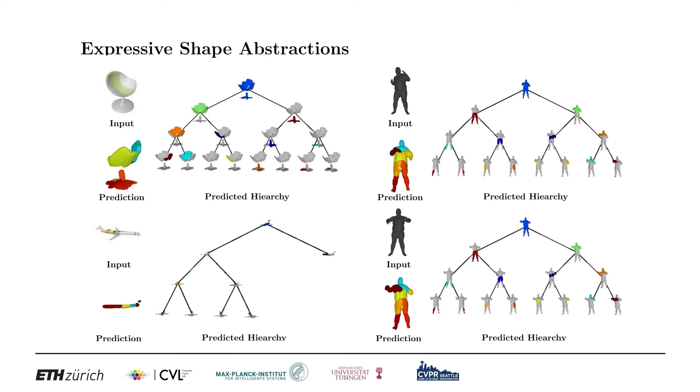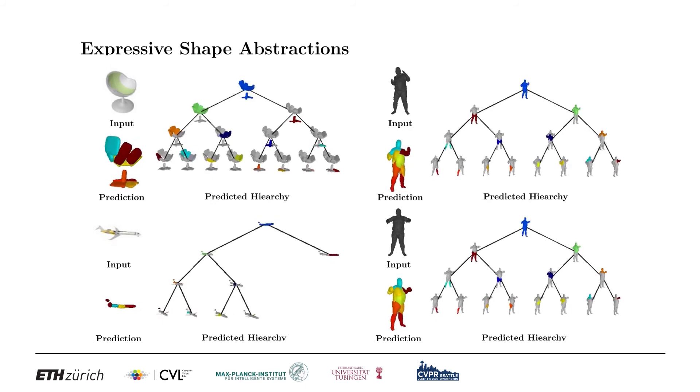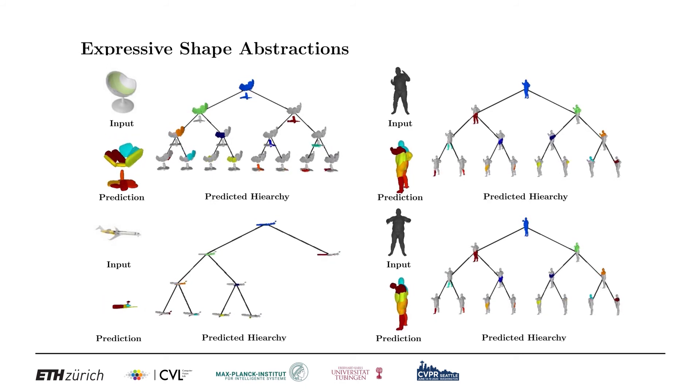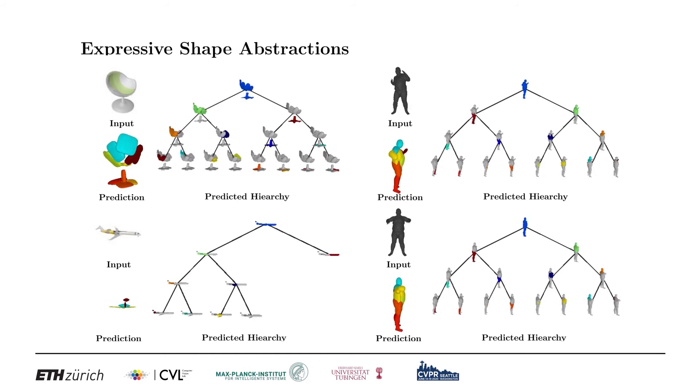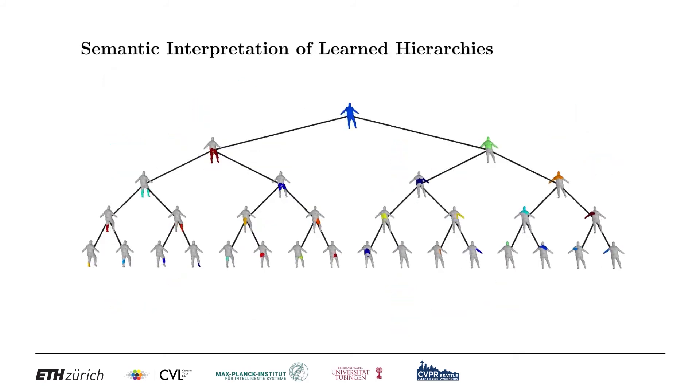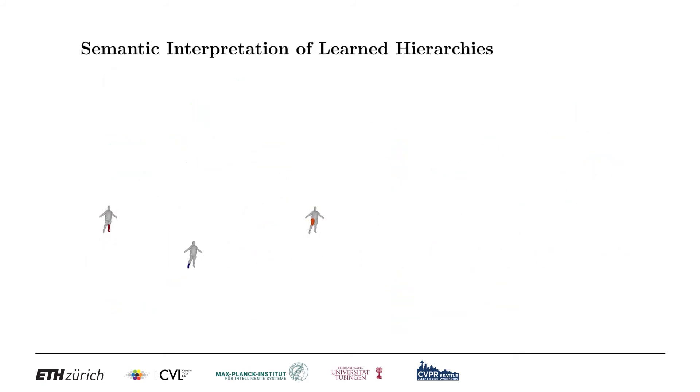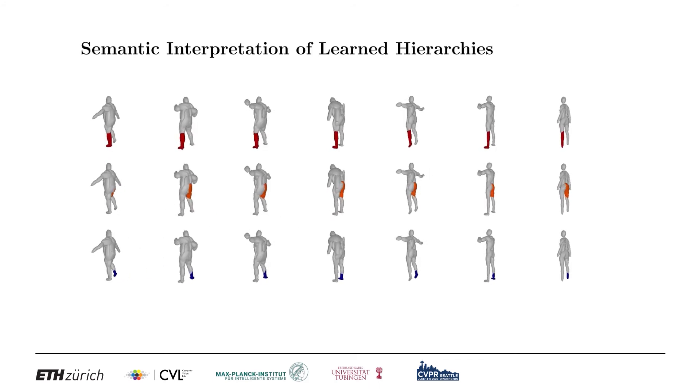Evaluations on ShapeNet and Dynamic FAUST show that considering the organization of parts improves the reconstruction quality. Our learned hierarchies have a semantic interpretation as the same node is consistently used for representing the same object part.